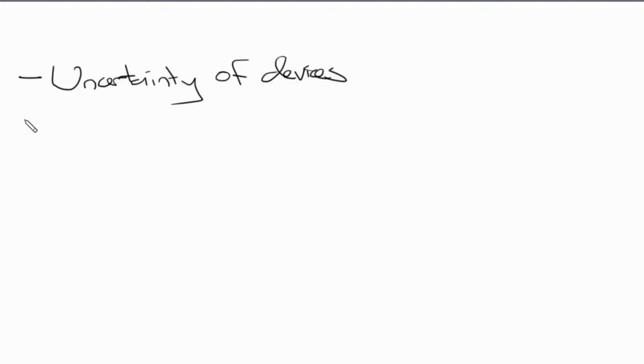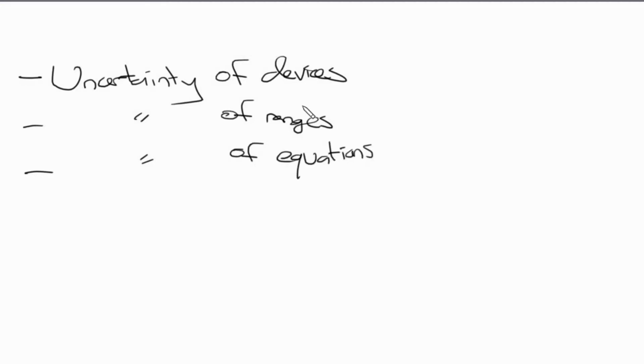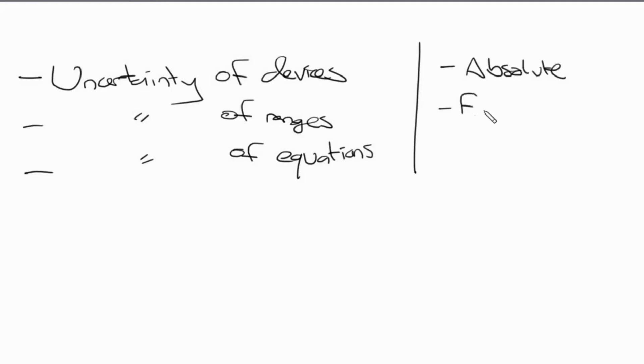We're going to talk about uncertainty. Uncertainties can be based on primarily three things: number one, uncertainty of devices; number two, uncertainty of ranges; and number three, uncertainty of equations. Alongside these, we also need to learn three types of uncertainty: absolute, fractional, and percentage. We're going to talk about these, starting with devices and how we get uncertainties, then moving to the types of uncertainties.